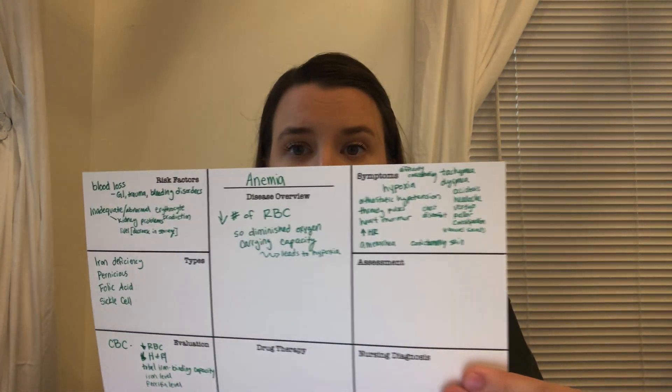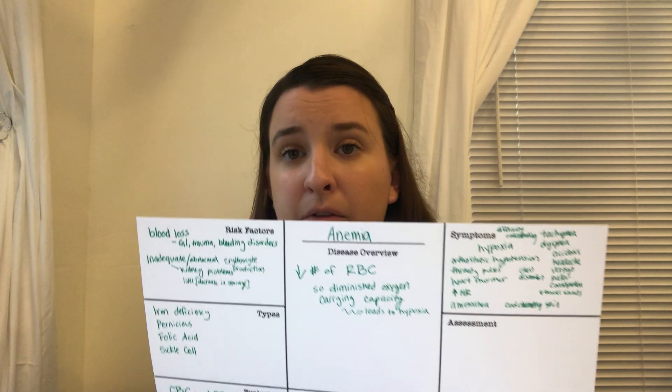Nursing interventions for sickle cell anemia include managing pain, encouraging vaccines, avoiding sick people, continuous O2 monitoring in the hospital, and keeping the patient hydrated with IV fluids. To summarize all anemias: they all involve the decreased number of red blood cells and their reduced ability to carry oxygen — whether through iron deficiency, folic acid deficiency, inability to absorb B12 (pernicious), or abnormally shaped red blood cells (sickle cell).